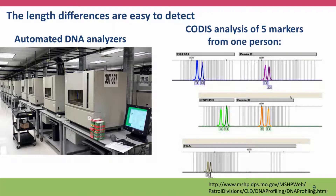Length differences can easily be detected by automated DNA analysis. Here's an example of a readout of the markers from one person — here are the two alleles of one marker, two alleles of a different marker, a different one, a different one. In each case they're shown as a trace, and the position of the peaks identifies the number of repeats. At this locus this person has a seven-repeat allele and a nine-repeat allele.